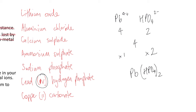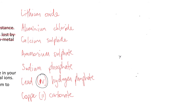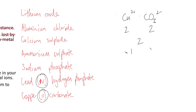And finally, copper carbonate. Copper here is Cu2+ because the Roman numeral for two is written. The carbonate is CO₃²⁻. Magnitude 2 and magnitude 2 — lowest common multiple 2. Times it by 1 each, and you have copper carbonate: CuCO₃.